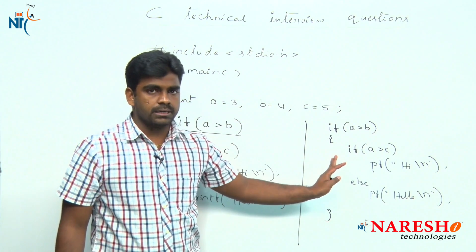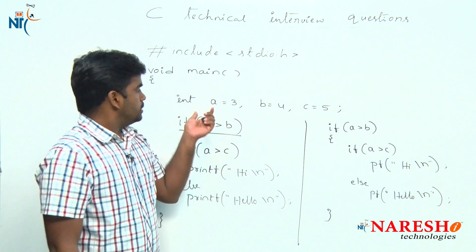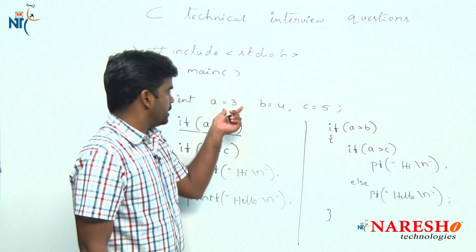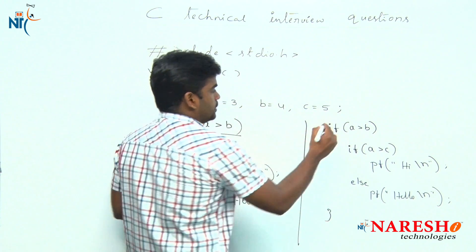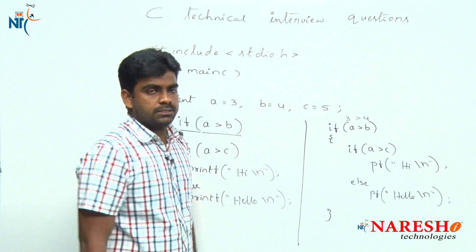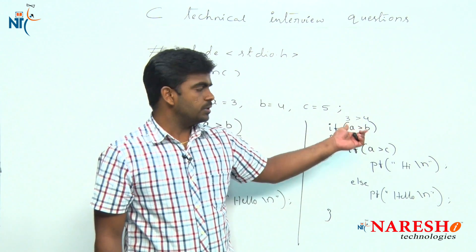Now apply the values - a is 3, b equals 4, and c equals 5. A value is 3. 3 is greater than 4, it will check the condition. 3 is greater than 4, is it true value or false value? It is false.